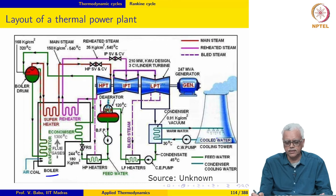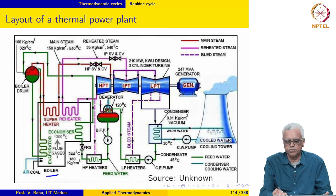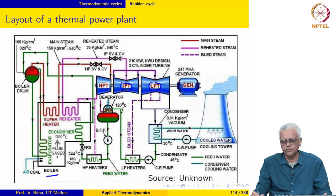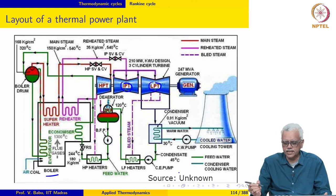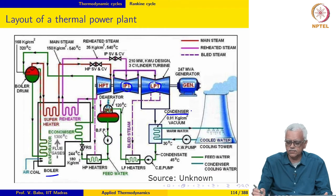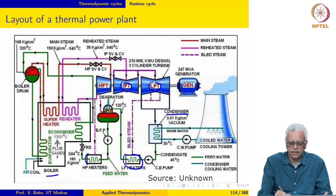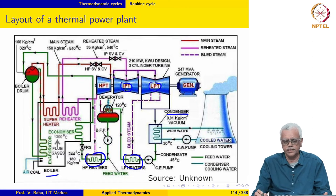Distressingly, it produces 4200 tons of ash a day and 30,000 tons a day of CO2, and 680 tons of SOx and NOx per day. Looking at the layout of this plant, you can notice there are three turbines: a high pressure turbine, an intermediate pressure turbine, and a low pressure turbine. There is also a condenser, two feed water heaters, and an additional component known as a deaerator.